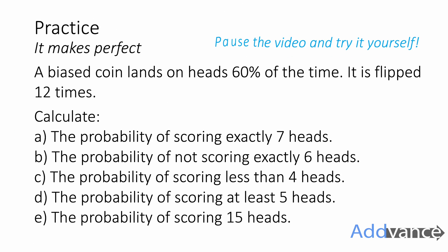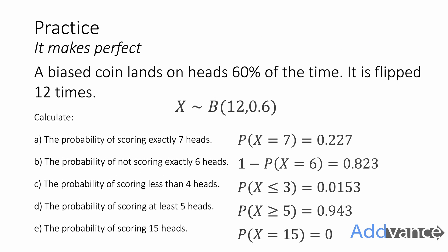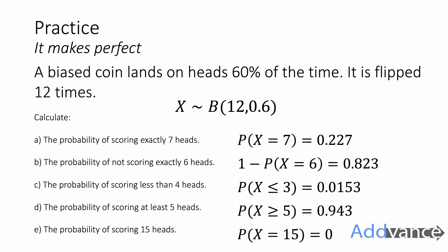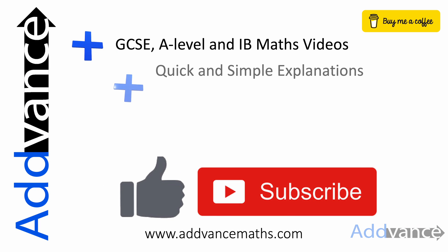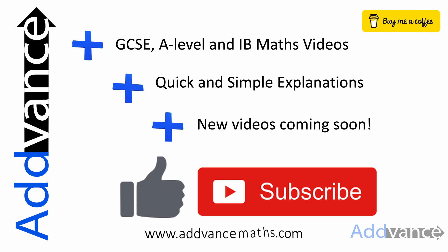Those are the two examples for today. It's now time for you to have a go yourself — pause the video and have a go at the question on screen: a biased coin lands on heads 60% of the time and is flipped 12 times; calculate the probabilities as shown. Thank you for watching this week's video from Advanced Maths. Remember to like and subscribe to support the channel, and share this with friends and classmates. We're covering GCSE, A-level, and IB Maths with quick and simple explanations. Check out advancedmaths.com for more revision resources. Good luck in your exams.